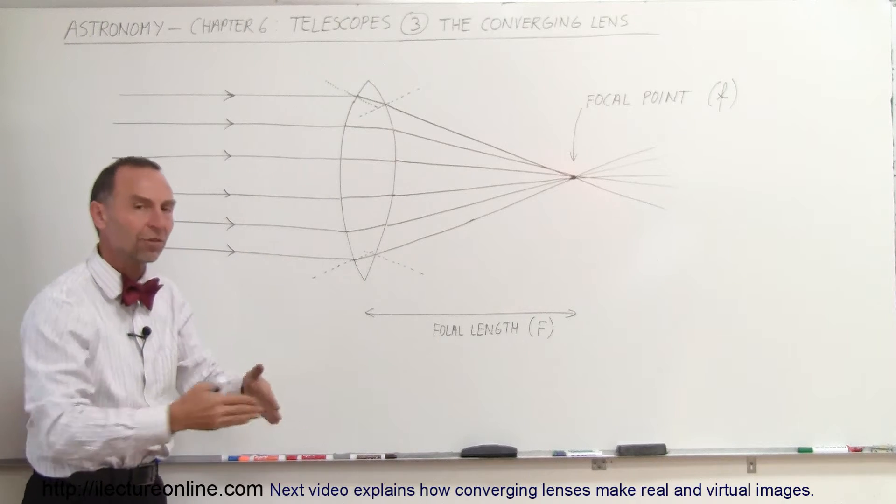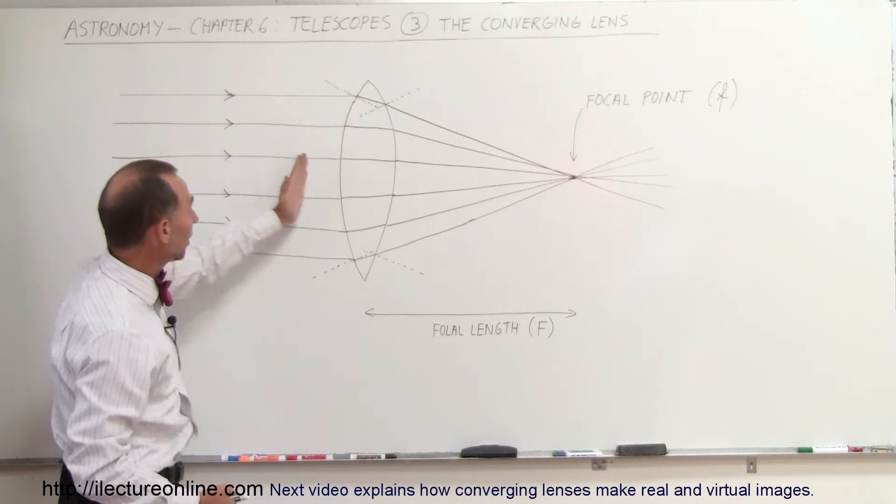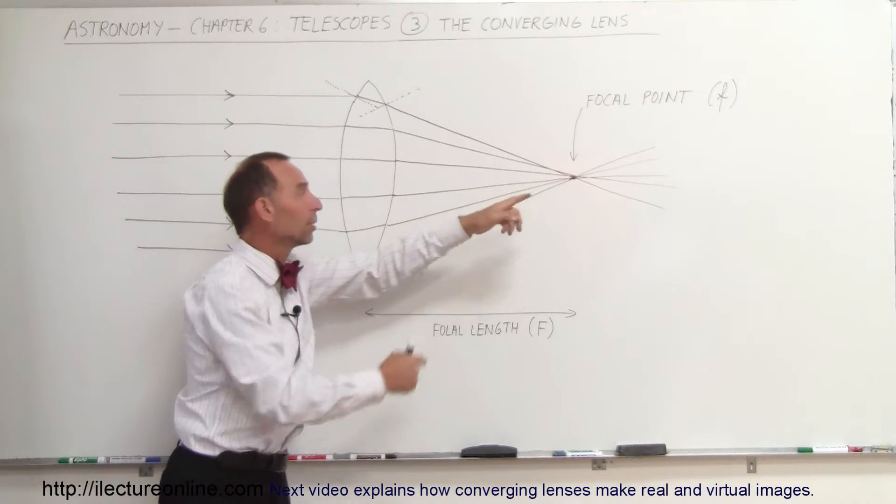So this is called a converging lens. The rays come together after they travel through the lens. They come to the lens parallel, go through the lens, and they come together to a single point.